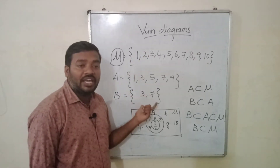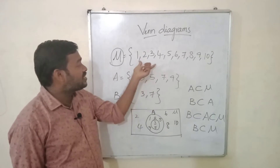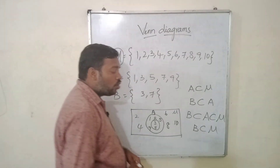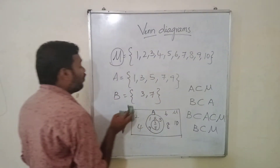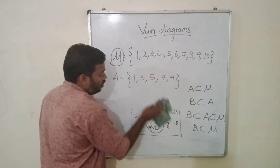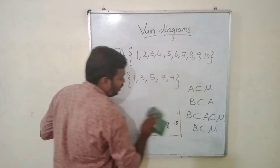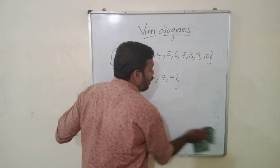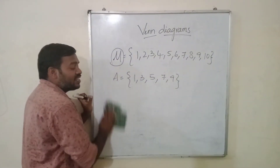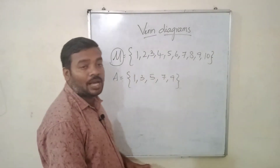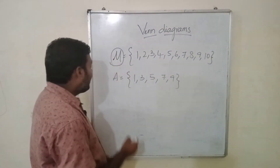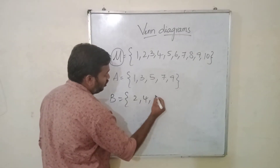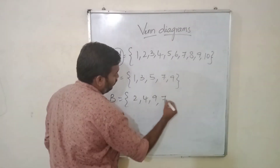Every element of B is present in the universal set. Next, we shall go over sets which are not subsets of each other. Here we have discussed subsets. Let's go over sets which are not subsets to each other. Let us say B will be 2, 4, 9, 7.